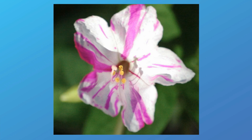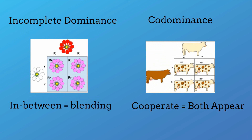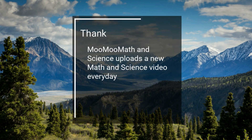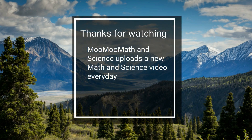They are cooperating and appearing together. So there we go — the difference between incomplete dominance, which is blending, and co-dominance, which is both cooperating and appearing. Thanks for watching, and MooMooMath uploads a new math and science video every day.